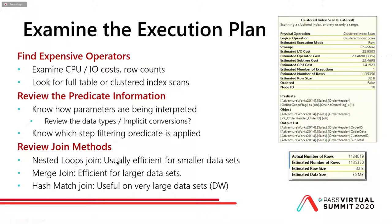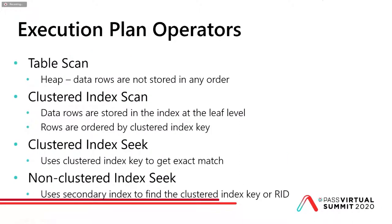Also review the join methods. Nested loop join is usually efficient for smaller data sets — usually when you have a parent-detail table and a lookup table. A merge join is efficient for larger data sets, and a hash match join is used for very large data sets, usually in OLAP type queries or data warehouse queries.